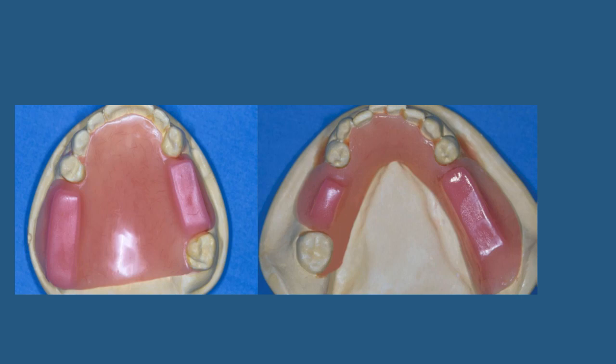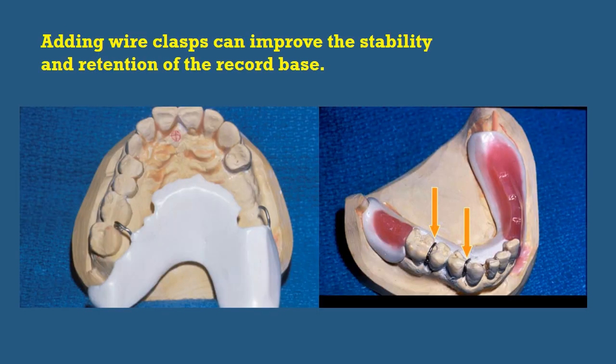This method is also indicated in cases of Kennedy Class II with modification 1. An occlusal rim is fabricated on both maxillary and mandibular casts. To improve stability of the occlusal rim, a clasp wire can be added to improve the stability and retention of the record base so that inter-occlusal records become more accurate. A record base with a clasp wire holds the record base accurately in the patient's mouth.